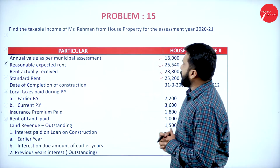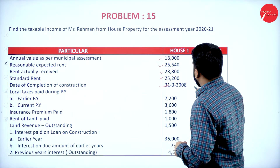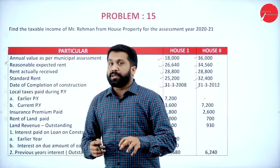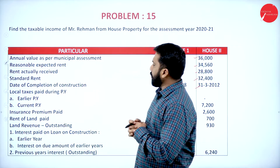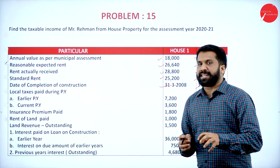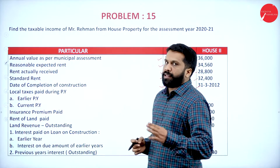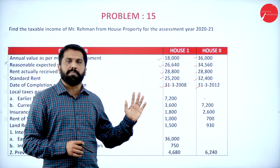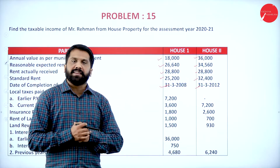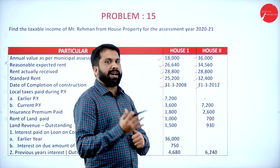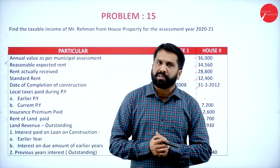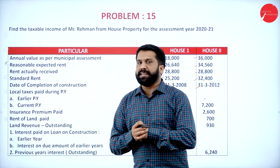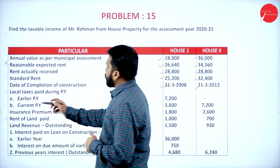Along with that we have the date of completion of construction. Now for this problem the date of completion is not required actually, because they have not mentioned when construction started. The rule is: earlier it was 3 years, but right now they are supposed to complete construction within 5 years. Any interest taken has to be claimed when construction completes within 5 years. If it exceeds 5 years then you are not eligible to claim any interest on that.